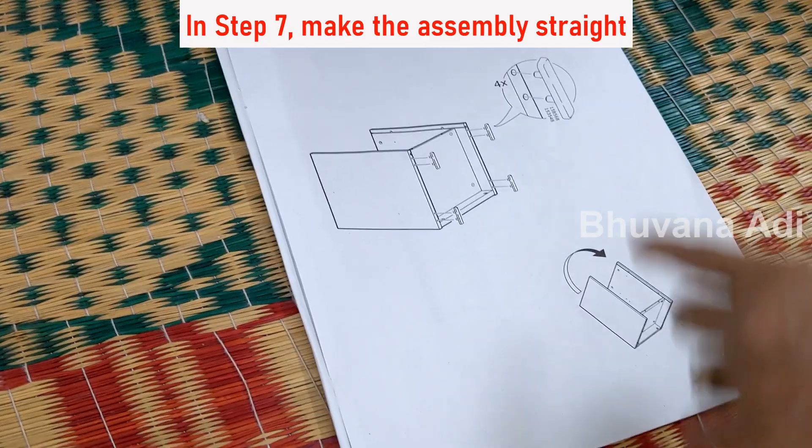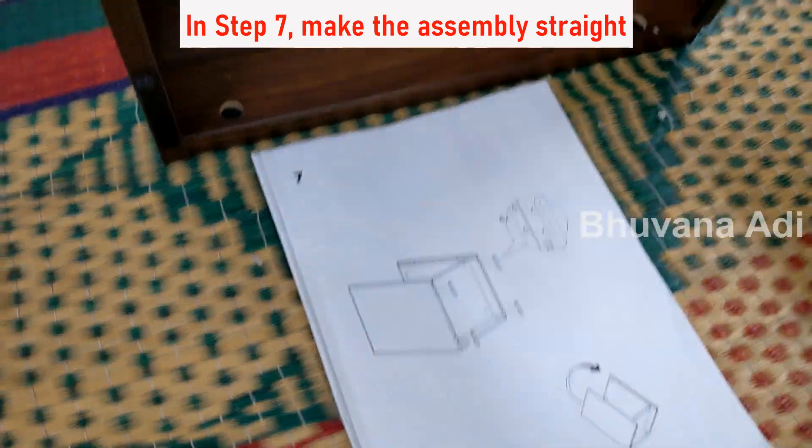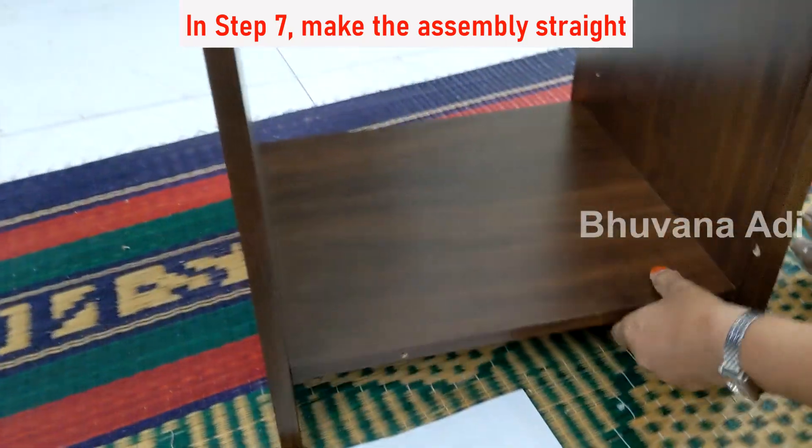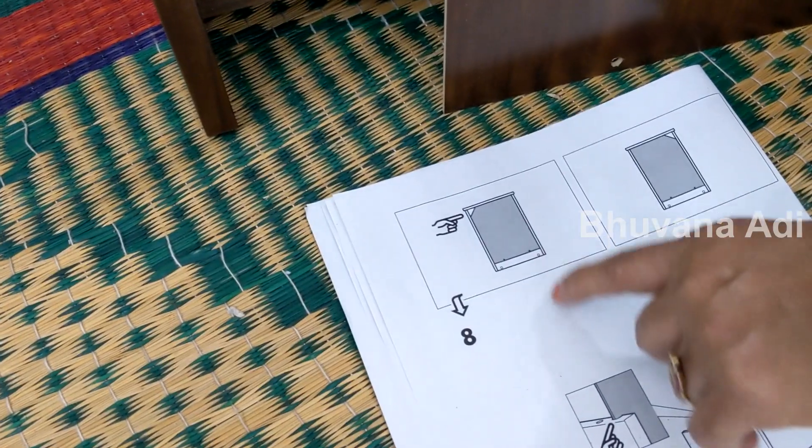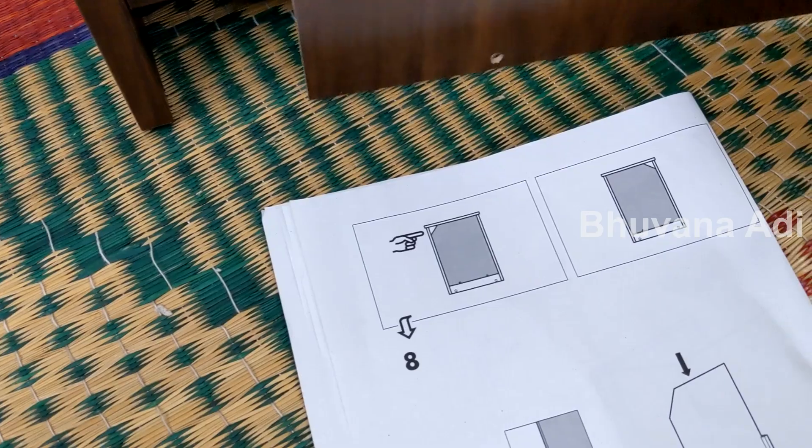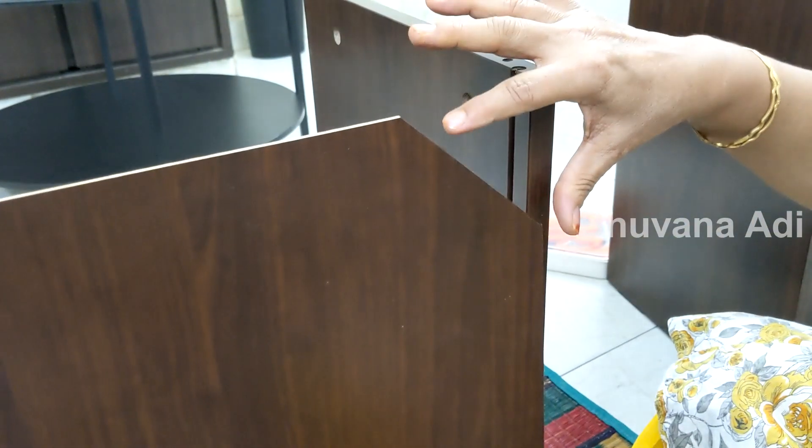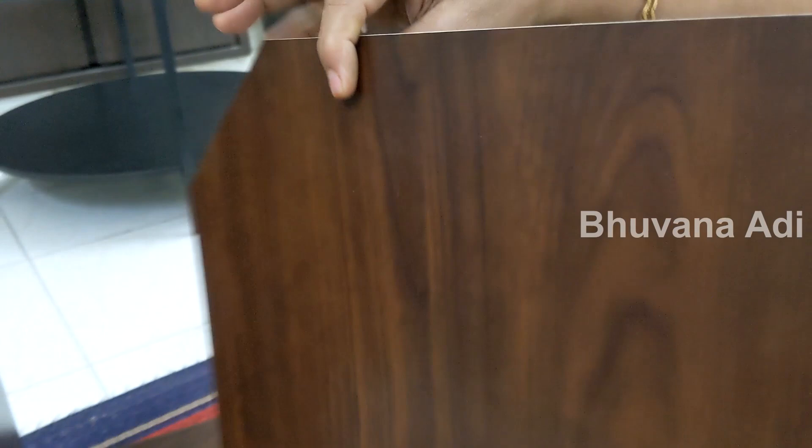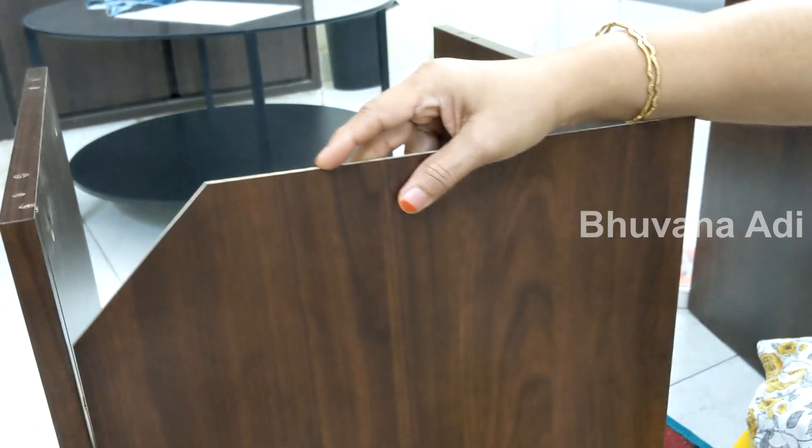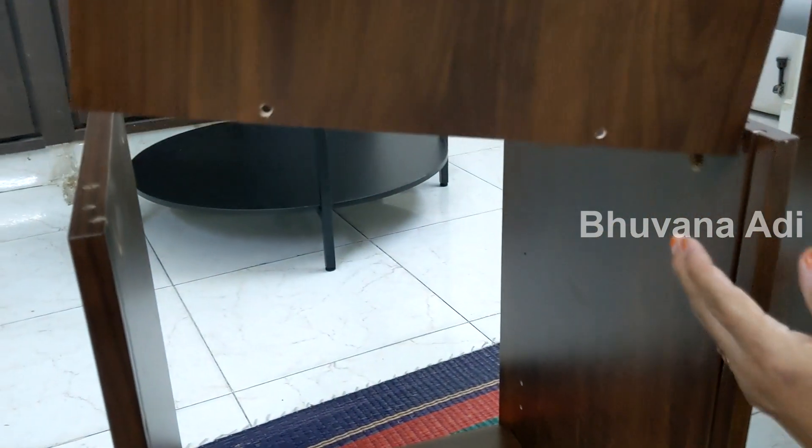So in the seventh step, make the assembly straight. And the eighth step, we are going to fix this plank on the back side. There is a groove provided for opening. So it can be placed either this way or this way. Opening here. It has to be just slid from this.